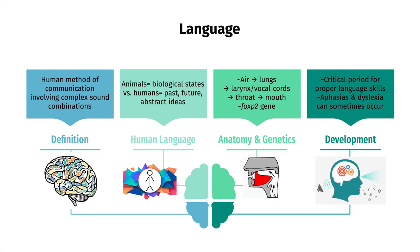Next is language, arguably one of the human behaviors which distinguishes us from other living things. Language is defined as a human method of communication that involves the use of complex sound combinations. Unlike other animals which communicate mostly to convey a biological state, we can use language to talk about the past, the future, and abstract ideas. The right hemisphere specializes in perceiving nonverbal information such as facial expressions, while the left hemisphere specializes in speech and language. It contains Broca's area, which allows us to talk, and Wernicke's area, which allows us to understand speech. Generating speech involves: lungs taking in and pushing out air, which passes through the larynx or voice box causing vocal cords to vibrate at a frequency that determines pitch, and then exiting through the mouth and nose.